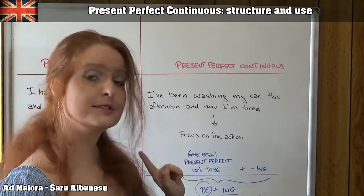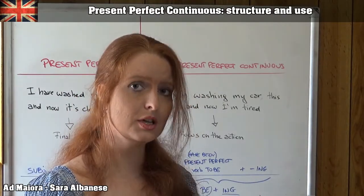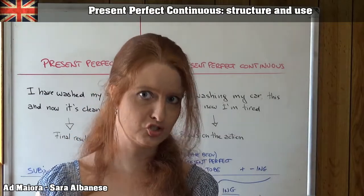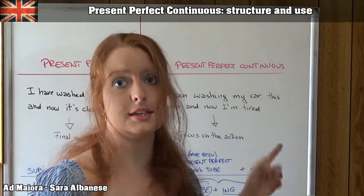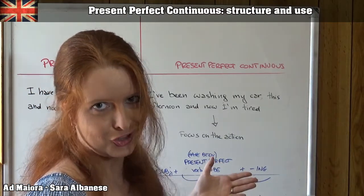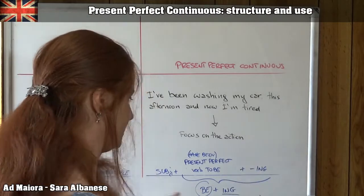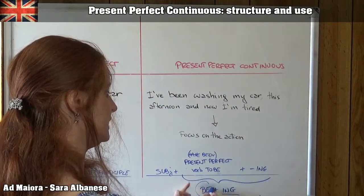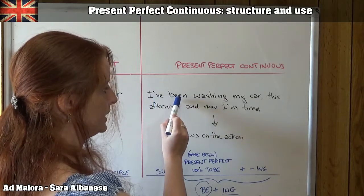Now, the present perfect continuous. It's just a continuous form, exactly like the present continuous. Remember how we form the present continuous? It was with the verb 'to be' and the -ing form (the gerund). This is exactly the same, but we have to conjugate 'to be' in the present perfect, not the present. So the present perfect of 'to be' is 'have been' or 'has been' for the third person singular. Together, 'have/has been' and the -ing form give us the present perfect continuous — for example, 'I have been washing'. 'Washing' is the gerund.